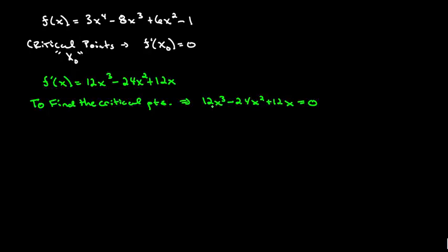Now we're going to solve this. The best way to solve this is by factoring. So let's go ahead and factor here. The GCF that I can pull out is 12x. And when I do that, what's left is x squared minus 2x plus 1.